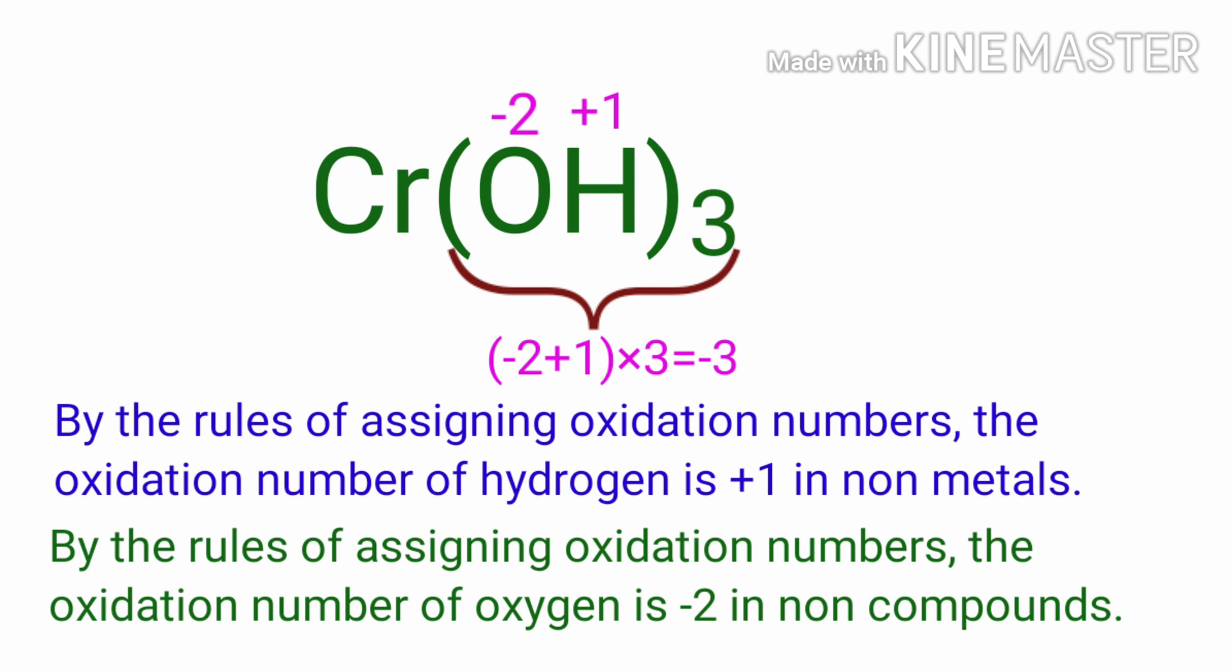As per rule of assigning oxidation numbers, the sum of the oxidation numbers of the atoms in a neutral compound is equal to 0. So, to nullify the charge, the oxidation number of chromium must be plus 3.